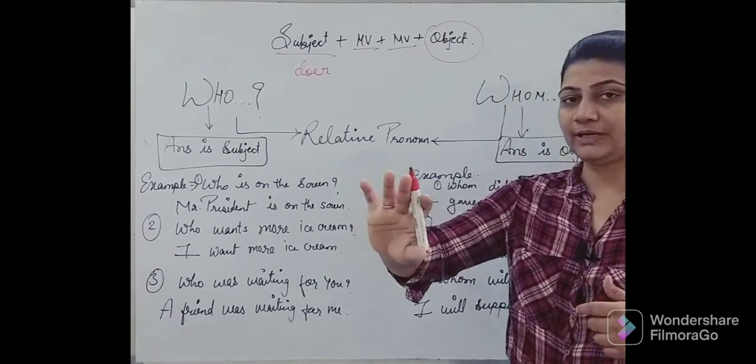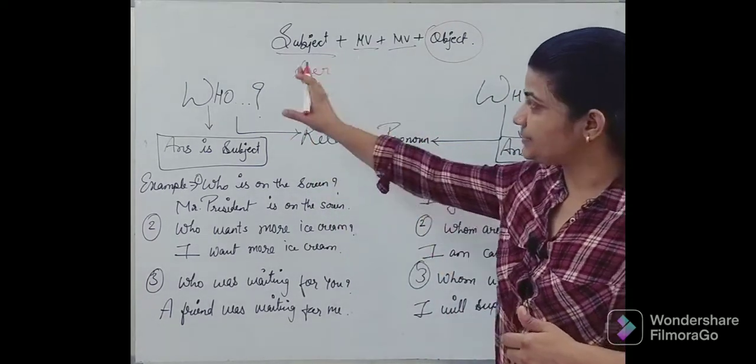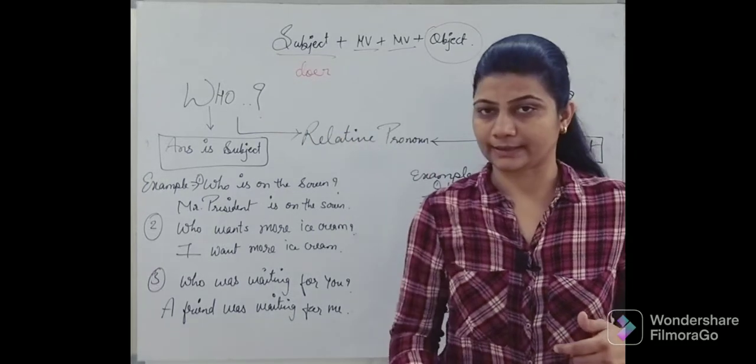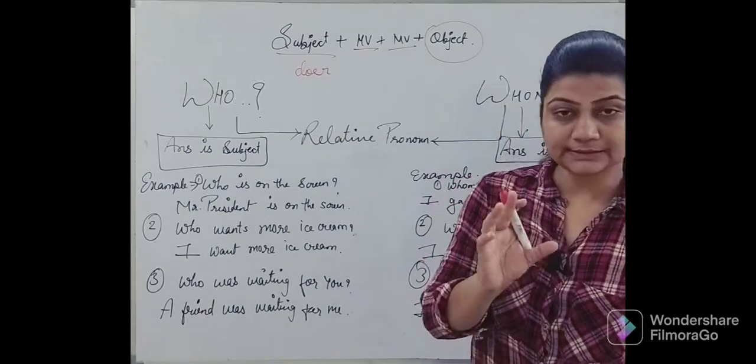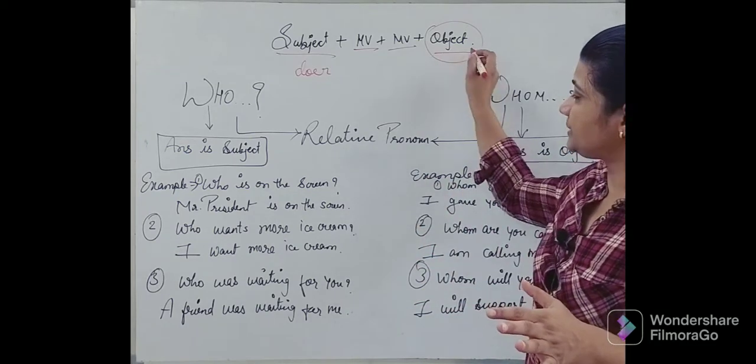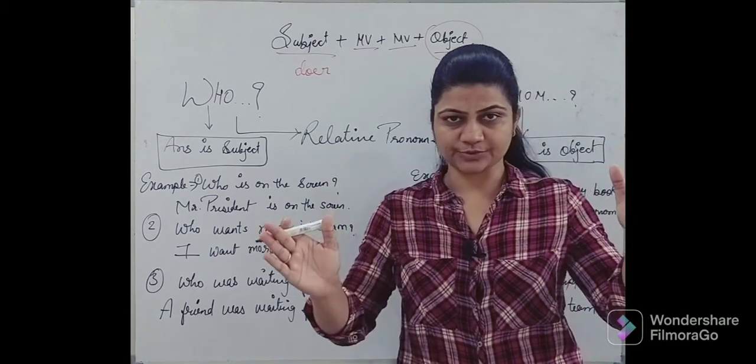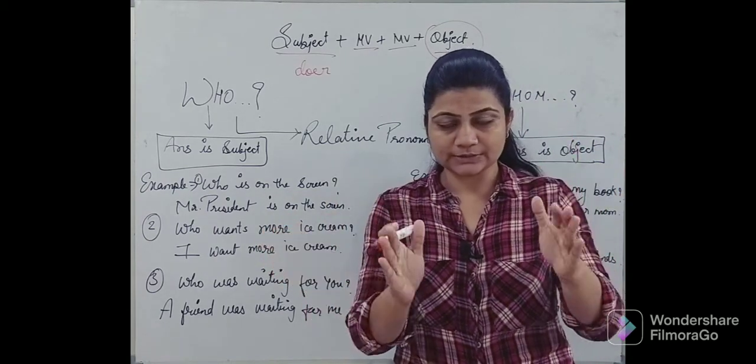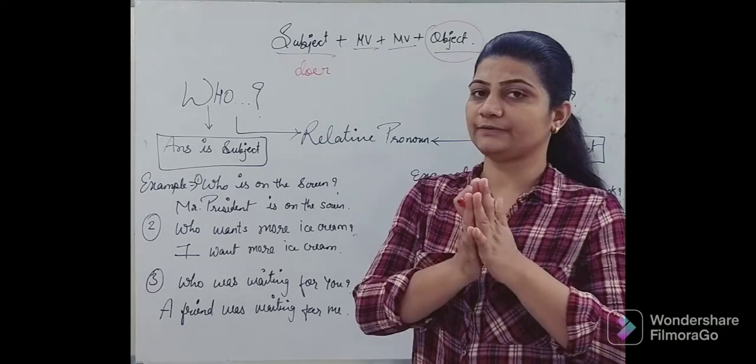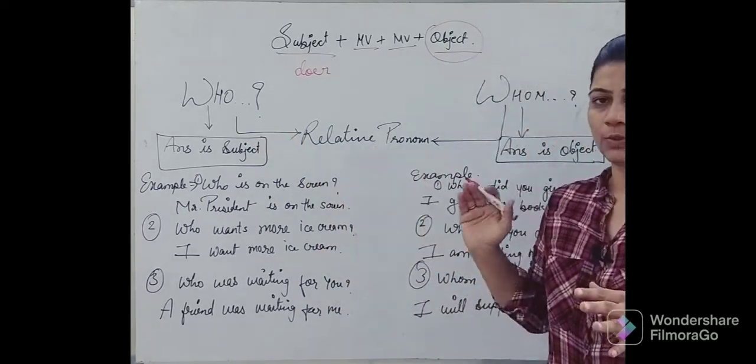You need to understand the difference between the subject and the object. Who is the subject who is doing the work? The subject is the doer of the action, and the object is on which the action is done. Okay, subject and object is clear. If your reference is clear in the subject and object, then you will get to know what is who and what is whom.